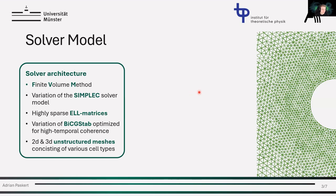So, as any sane person would do, I wrote my own computational fluid dynamics solver in Rust. It's based on the finite volume method and uses a simple CSR solver model where the fluid domain is essentially discretized onto highly sparse ELL matrices, solved with an optimized version of the big-step solver that exploits the high temporal coherence present in my simulations. Everything works with 2D and 3D unstructured meshes that can consist of various different cell types.